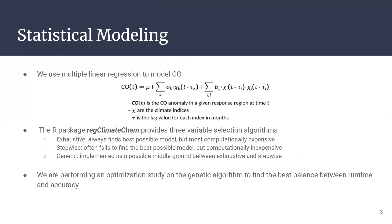We have the R package regClimateChem that has three different variable selection algorithms to produce the multiple linear regression models. These variable selection algorithms are the exhaustive method, which always finds the best possible model but is most computationally expensive.